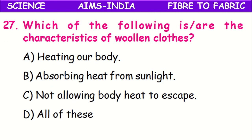Which of the following are the characteristics of woolen cloths? Woolen cloths heat our body — they give heat or warmth. They absorb heat from sunlight. They also do not allow body heat to escape outside. All of these are characteristics of woolen cloths.